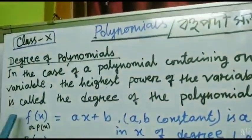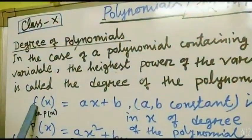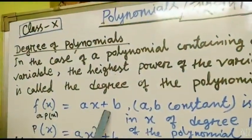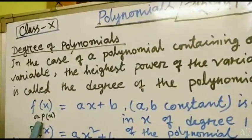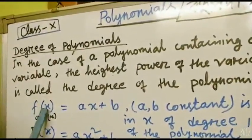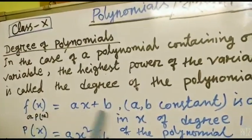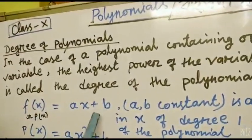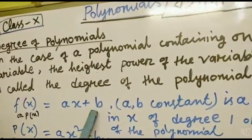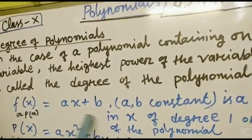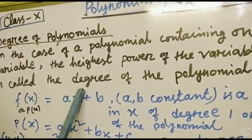We can express this as: p(x) = ax + b, or f(x) = ax + b, where a and b are constants. This is a polynomial of x. Here, what is the power of x? It is 1. So the degree is 1.